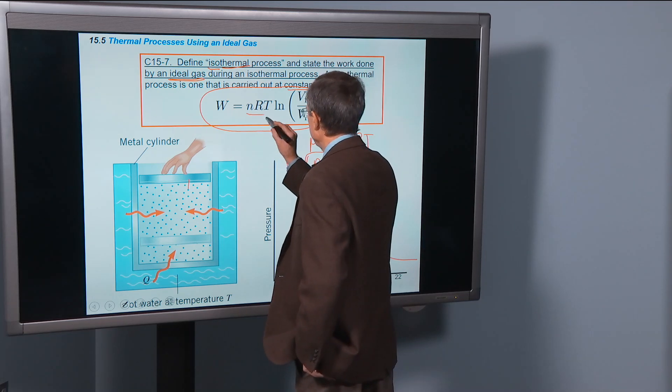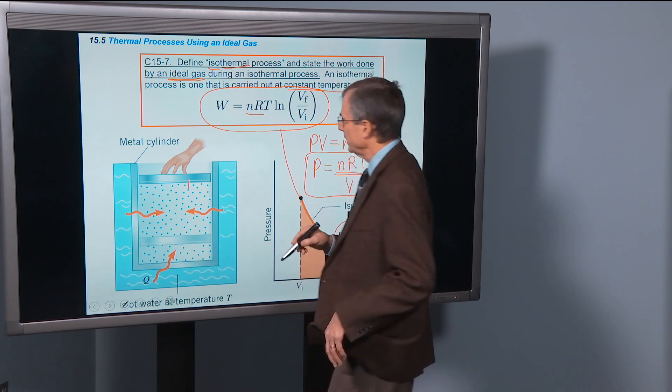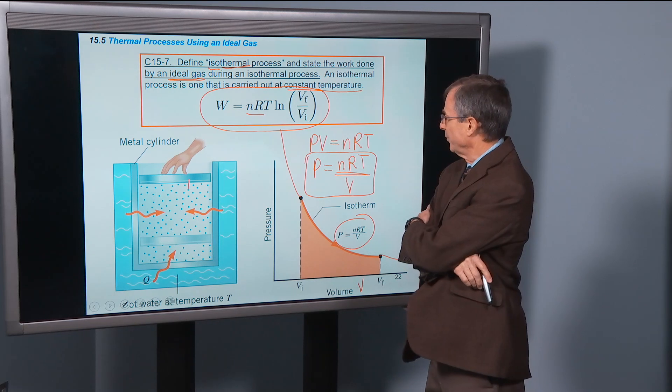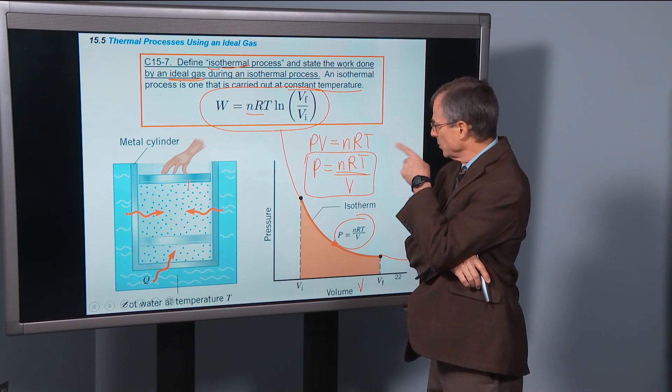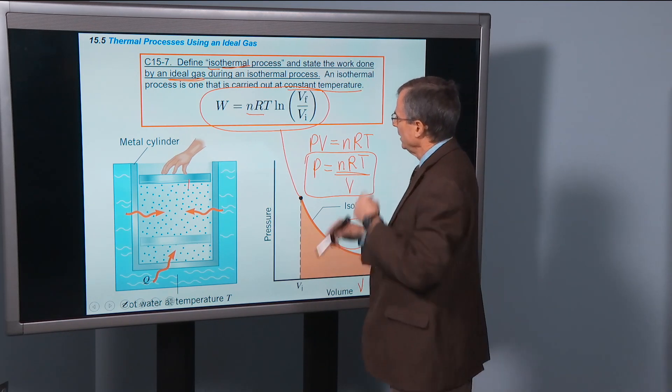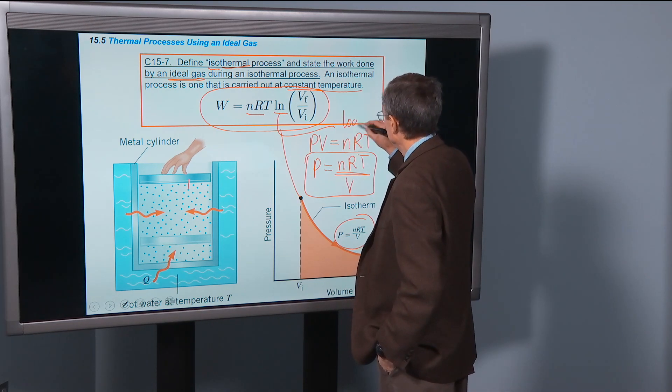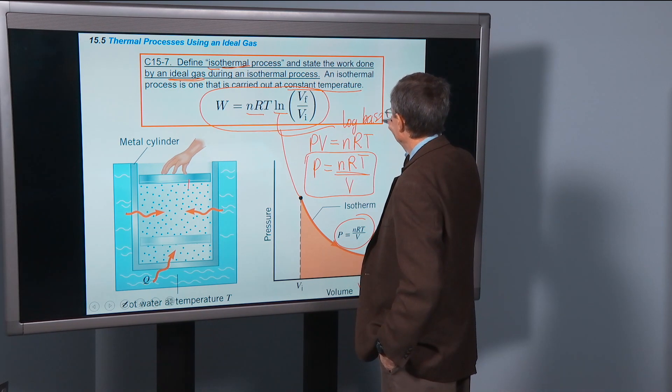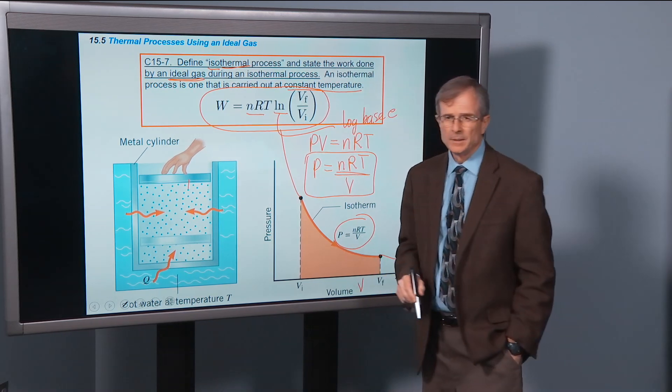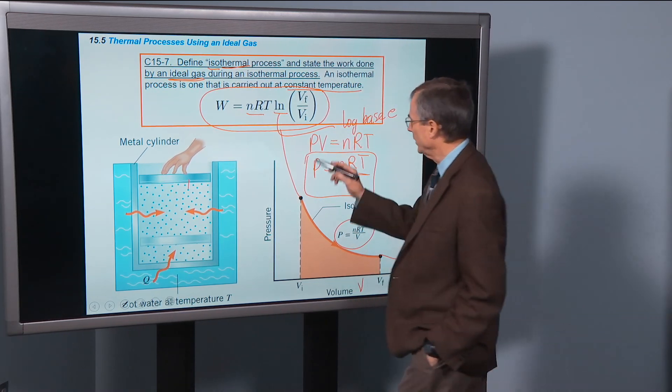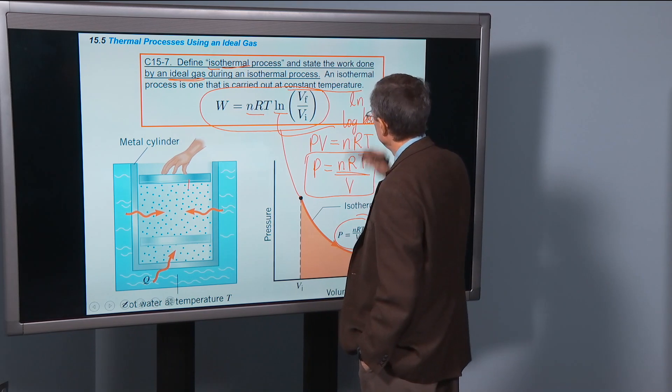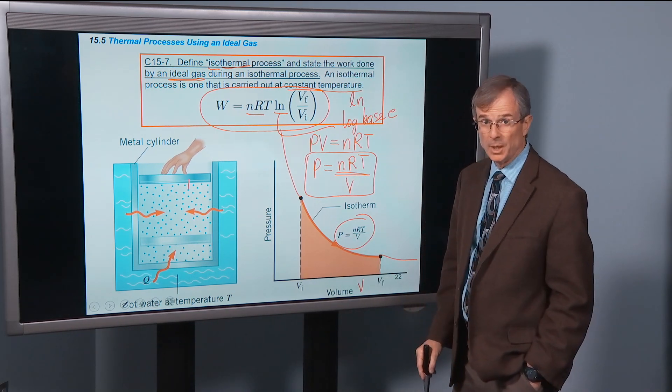But this is the result. The nRT comes along for the ride, and then we evaluate that logarithm at the final versus the initial. So the work done will be, and this is a log base e, not a log base 10, normally written as ln, natural logarithm.